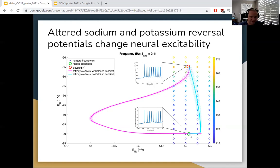With no calcium transient in cyan, the astrocyte effects take the reversal potentials through this pathway, and the neuron will fire with different frequencies at different stimulus timings along this curve.